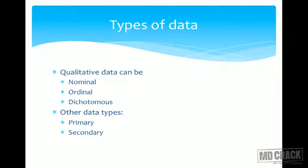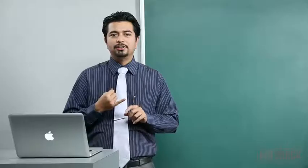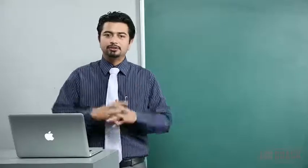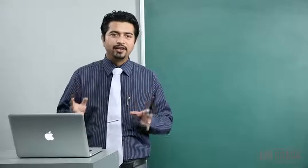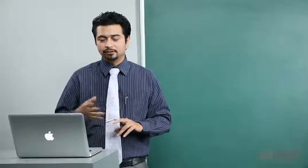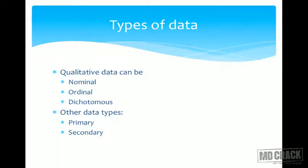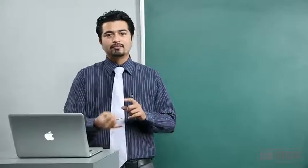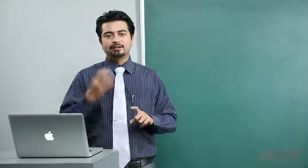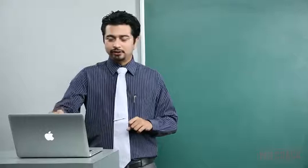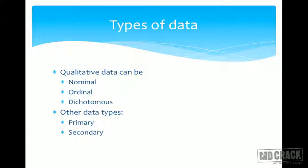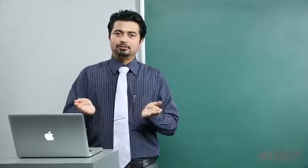Types of data in qualitative data: nominal, ordinal, and dichotomous. Nominal data has a name but no order — Hindu, Muslim, Christian, Jew — there is no ranking. Ordinal data has an order: lower class, lower middle class, upper class; or infant, adolescent, adult, geriatric — a definitive order exists. Dichotomous data has two possible answers: yes or no, boy or girl — only two options.